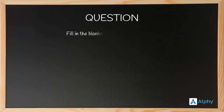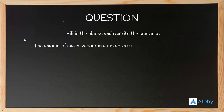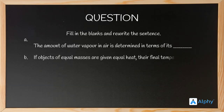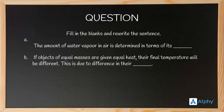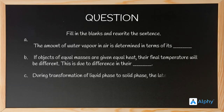Let's take a question: fill in the blanks and rewrite the sentence. First one: the amount of water vapor in air is determined in terms of its dash. Second one: if objects of equal masses are given heat, their final temperature will be different — this is due to difference in their dash. The third one: during transformation of liquid phase to solid phase, the latent heat is dash.